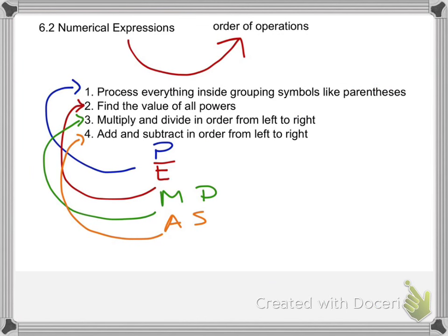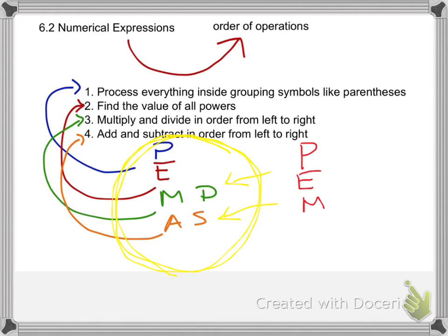This representation of PEMDAS isn't actually in your book — it's my rendition. I want you to notice that multiplication and division are on the same line, and addition and subtraction are on the same line, instead of going in strict order. When you write 'Please Excuse My Dear Aunt Sally,' it really looks like multiplication must come before division, which is not true. So copy the part I've circled in yellow.